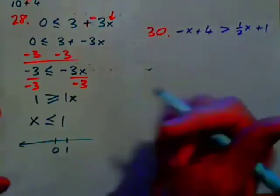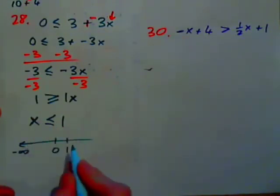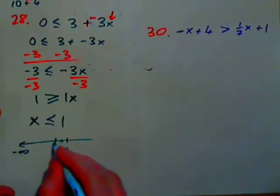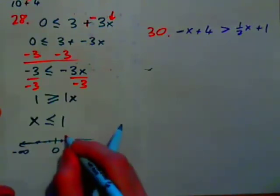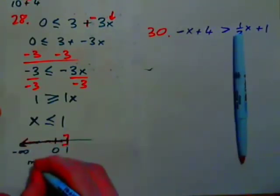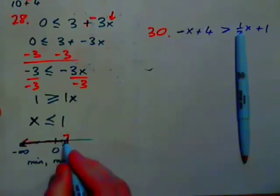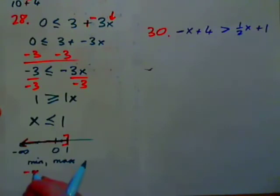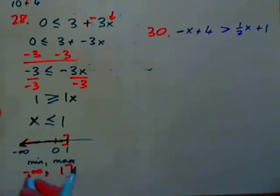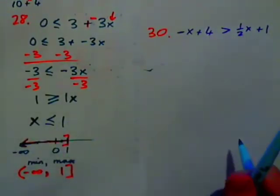For the line graph of x less than or equal to 1: x represents all numbers less than or equal to 1 — for example, one half, 0, negative one half, including 1 itself. Put a square bracket at 1 and extend to negative infinity. For the interval notation — written as minimum, comma, maximum — the minimum is negative infinity (parenthesis, since we never reach it) and the maximum is 1 (square bracket, since 1 is included): (-∞, 1].